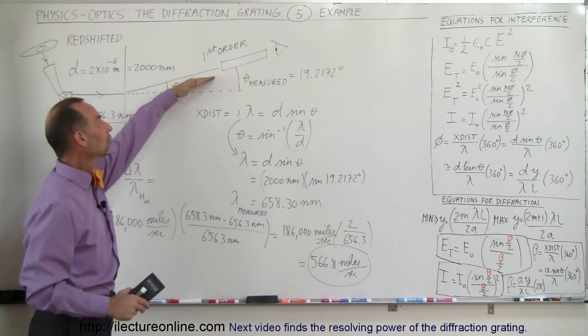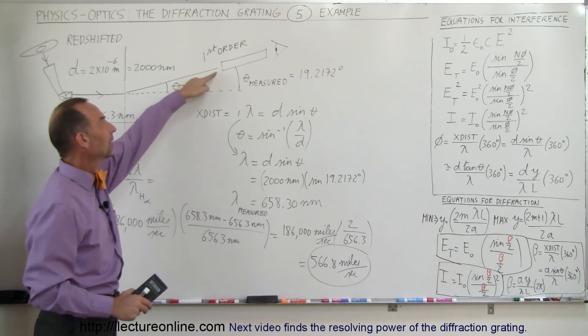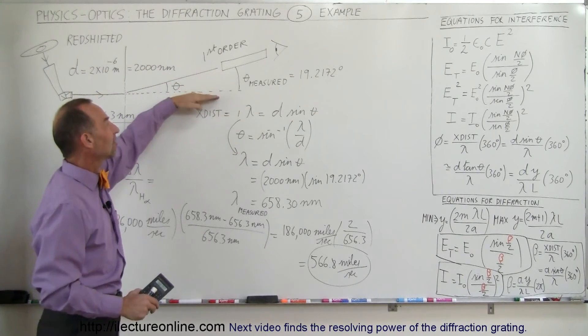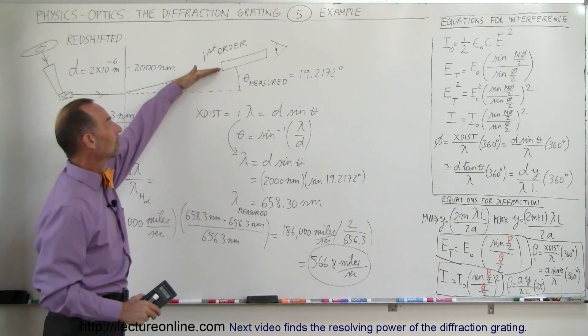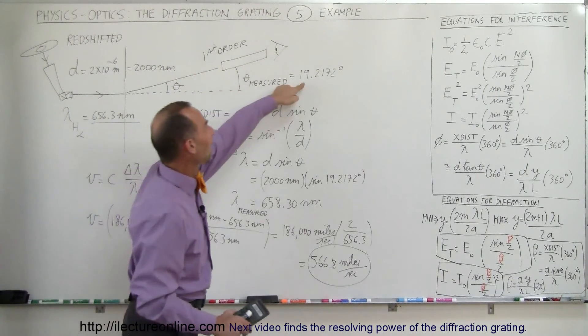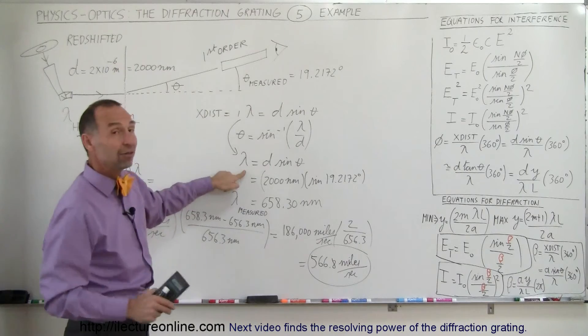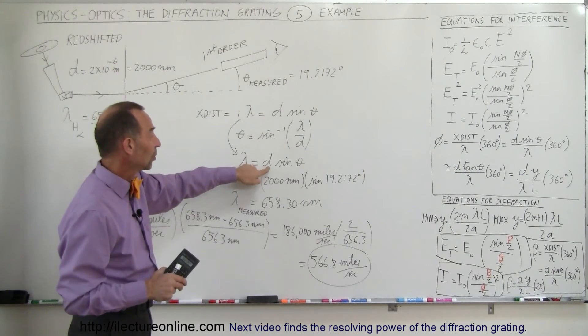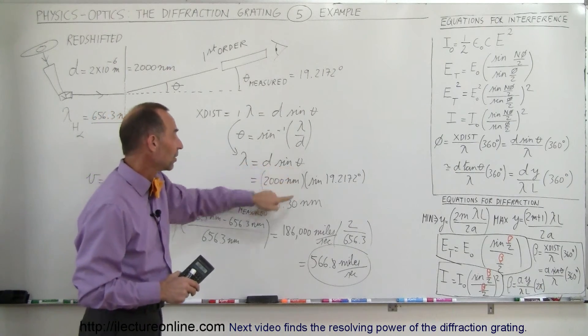Because of the interference pattern, we'll be able to measure that exact angle from the central maximum to where it appears. So we measure that angle. From that, we can calculate the wavelength that we're seeing. That's the distance between the slits times the sine of the angle. That gives us the exact wavelength of the observed light.